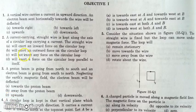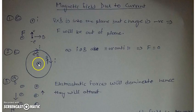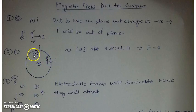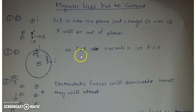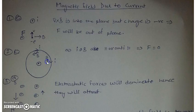The second question: a current-carrying straight wire is kept along the axis of a circular loop. We have to find what kind of force the straight wire will exert on the loop. The magnetic field due to the straight wire is parallel or anti-parallel to the current in the loop, so the force of interaction will be zero. The angle between field and current is either zero or 180 degrees, making their cross product zero.